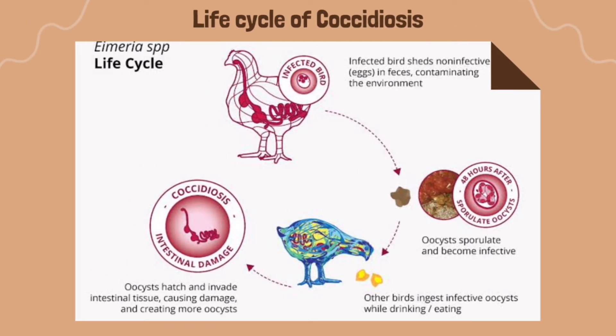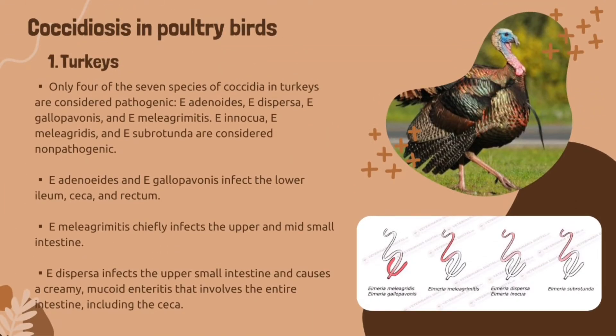Now let's learn about the life cycle of coccidiosis and how it is transmitted. First, an infected bird sheds non-infective eggs in feces, contaminating the environment. After 48 hours, oocysts sporulate and become infective. Other birds then ingest infective oocysts while drinking or eating, and the oocysts hatch and invade intestinal tissues, causing damage and creating more oocysts.